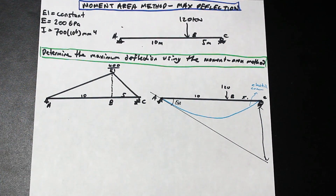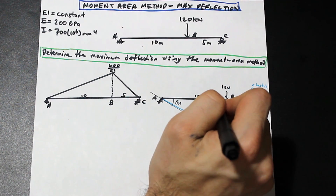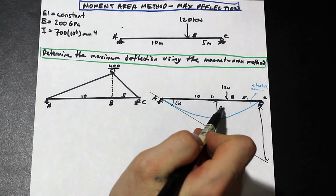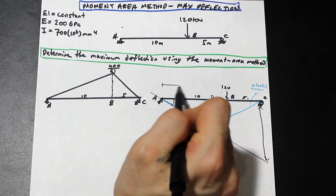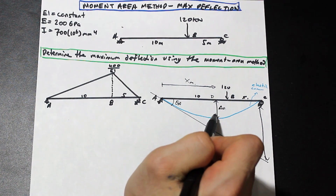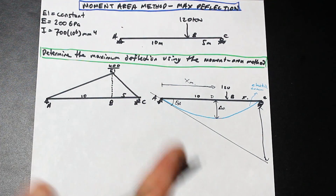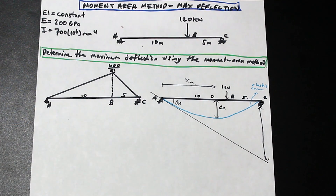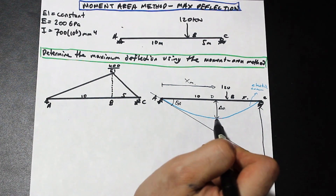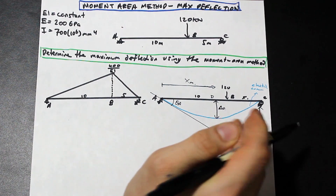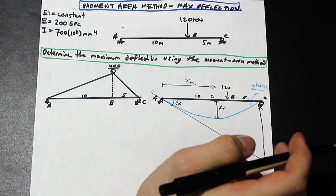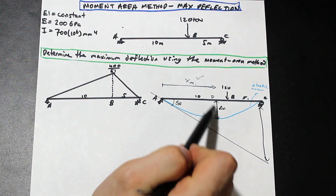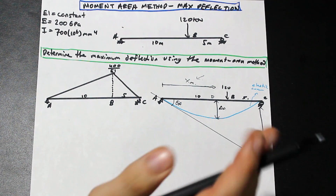We're looking for the max deflection, which we'll say happens at point D. So delta_D is our max deflection and it happens at some distance X. The problem is we don't know where this point is. What we do know is that the tangent line at point D has a slope equal to zero, because the maximum deflection occurs at the apex — the critical point of the elastic curve. So we need to use that information to solve it, but first we need to find X_M.